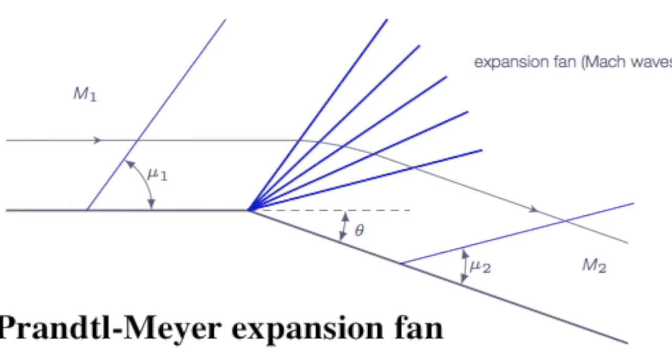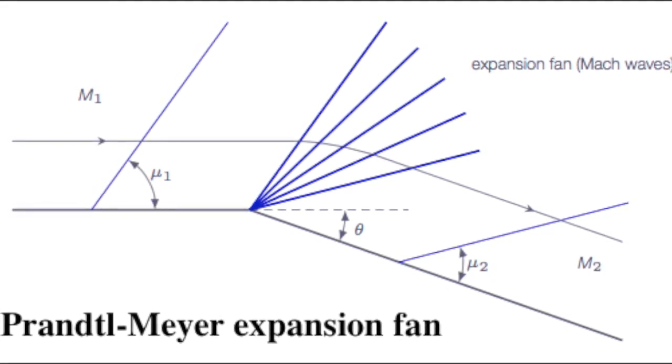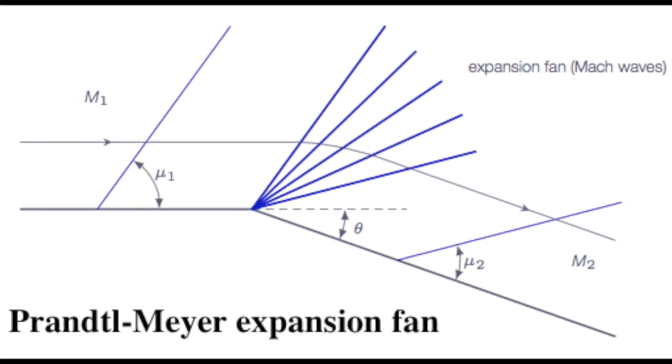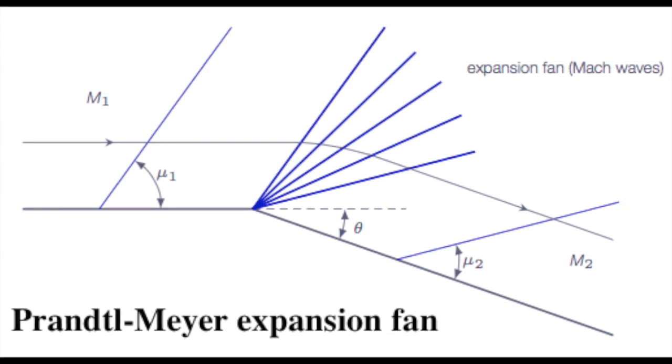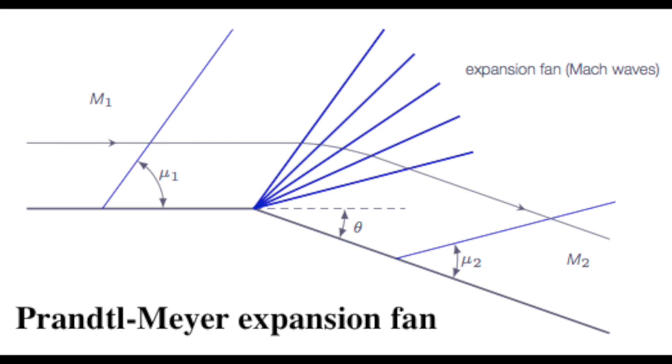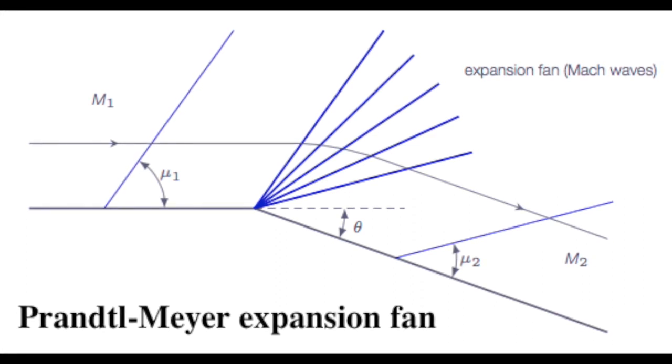Since the expansion takes place through a continuous succession of Mach waves and dS equals to zero, the expansion is isentropic. Prandtl in 1907 followed by Meyer in 1908 first worked out the theory for such a supersonic flow. It is denoted as Prandtl-Meyer Expansion Wave.